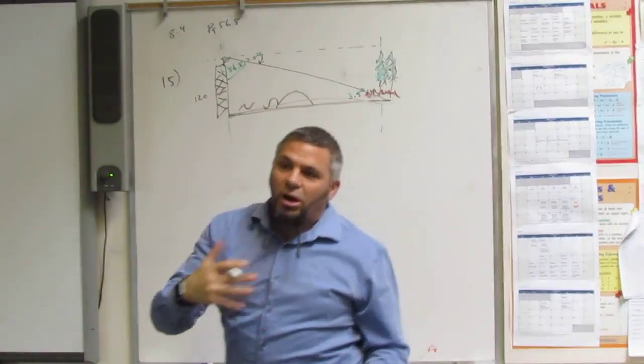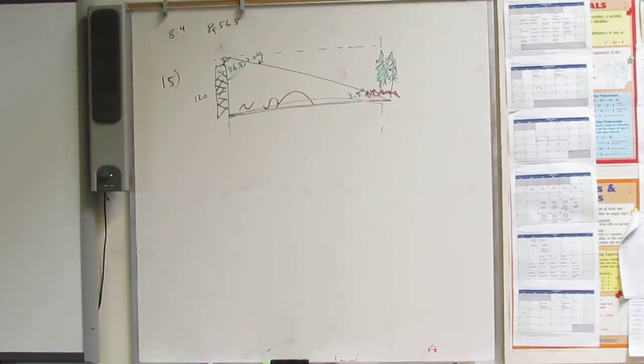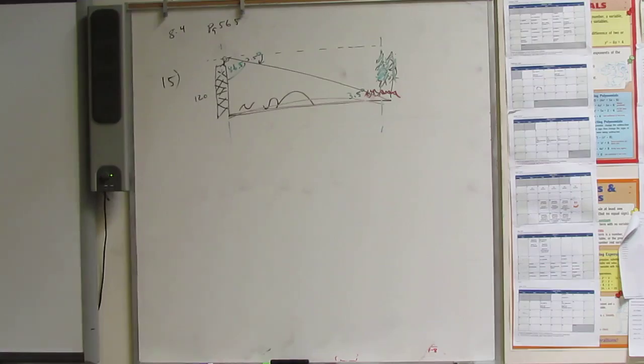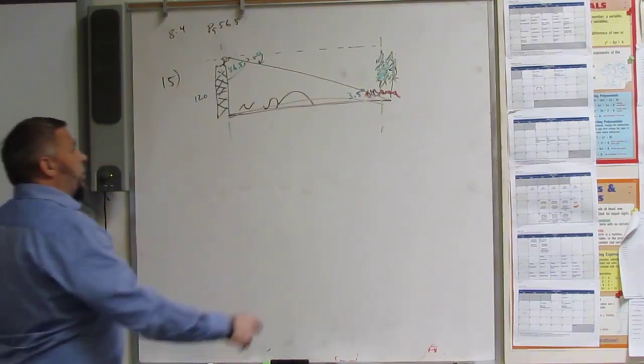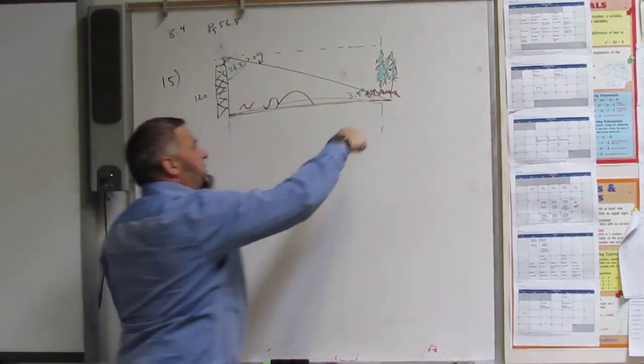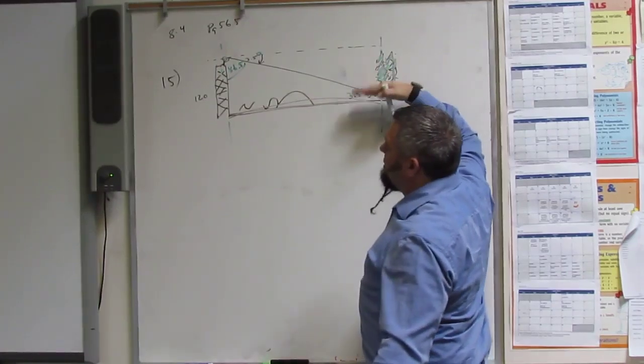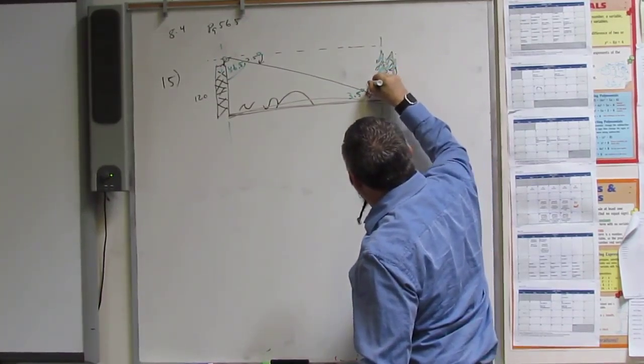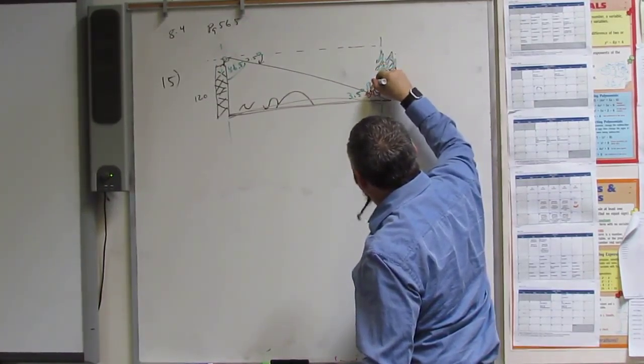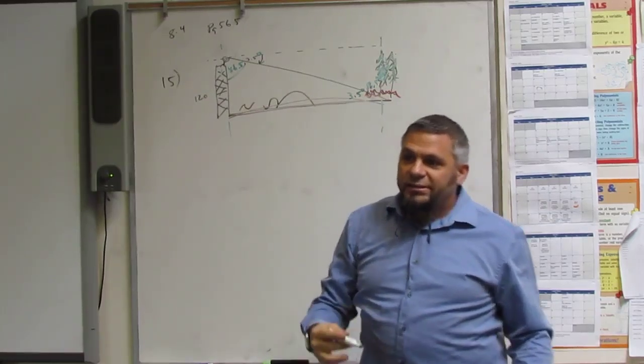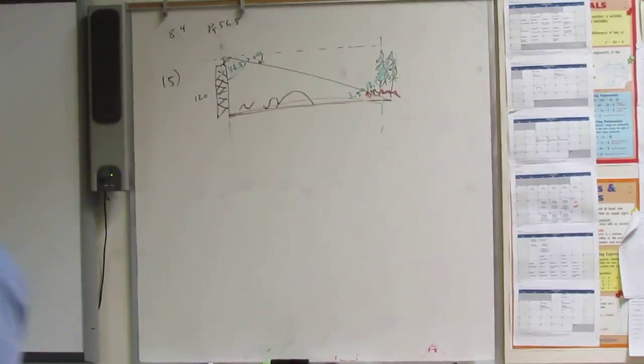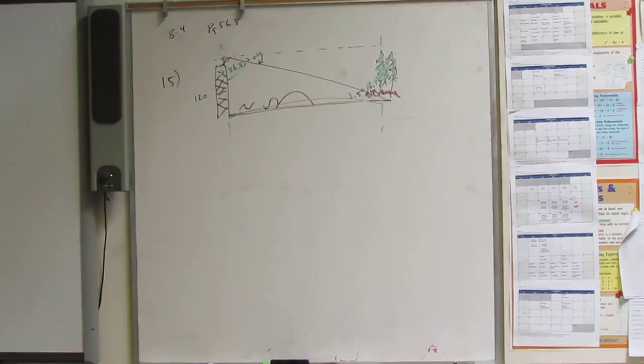So this uses all that stuff we learn all year long, right? So, we know this, and we also know this one, right? This angle of elevation is actually 86.5 degrees, right? Because it's 90 degrees minus the 3.5. So we could use either one.